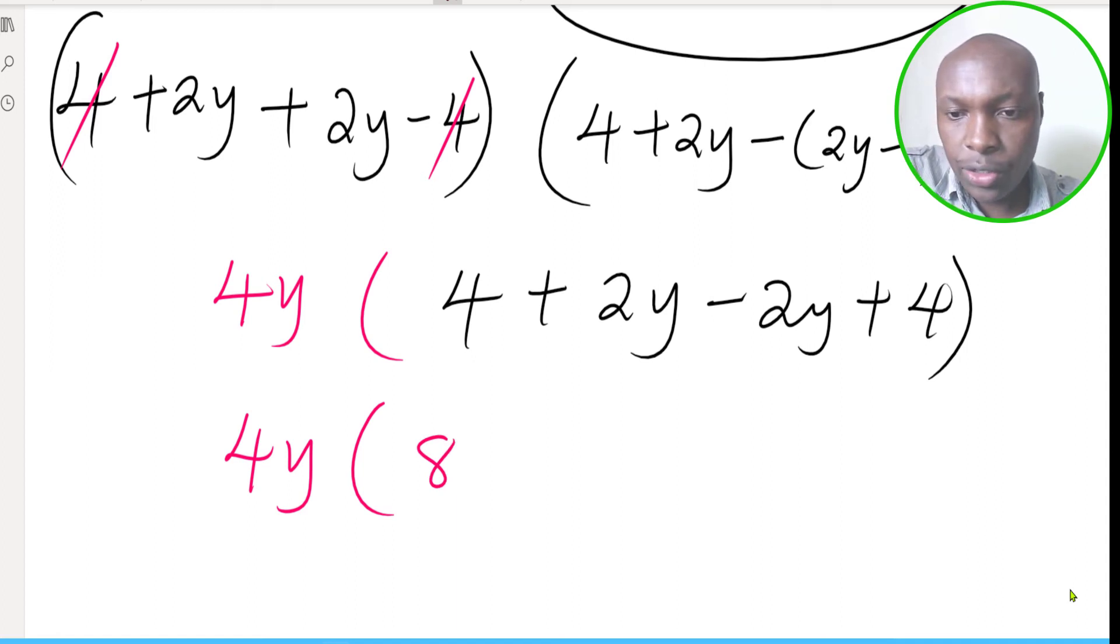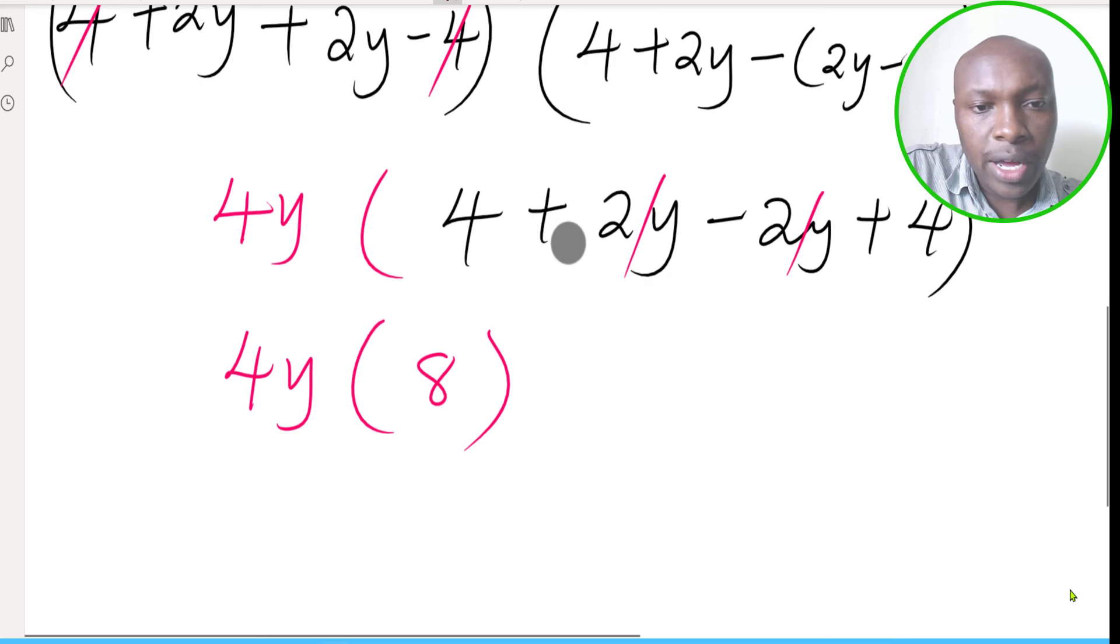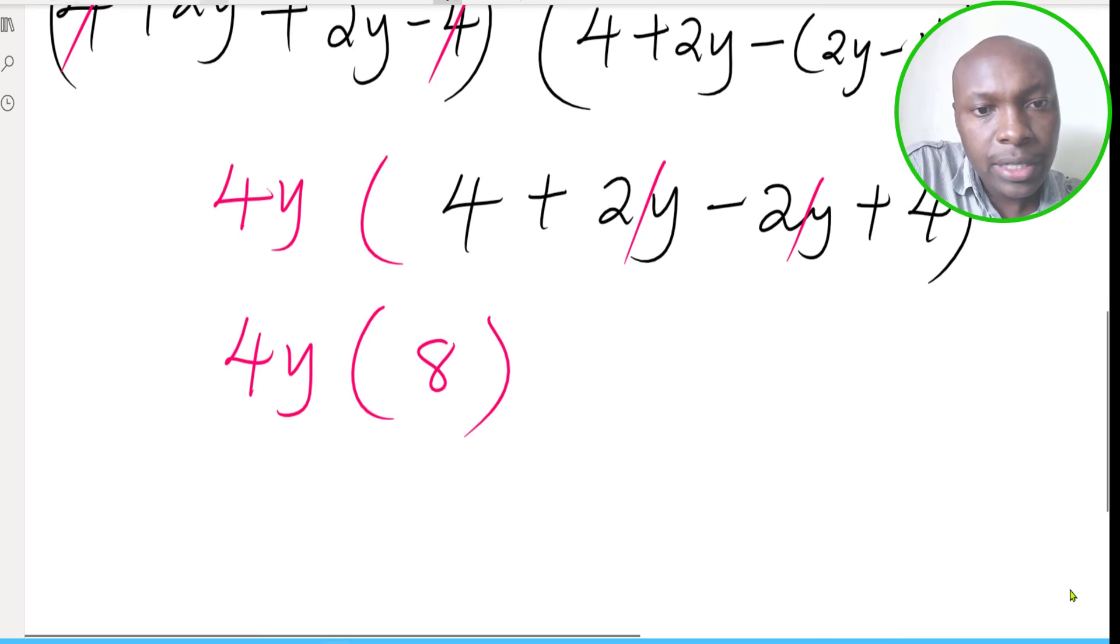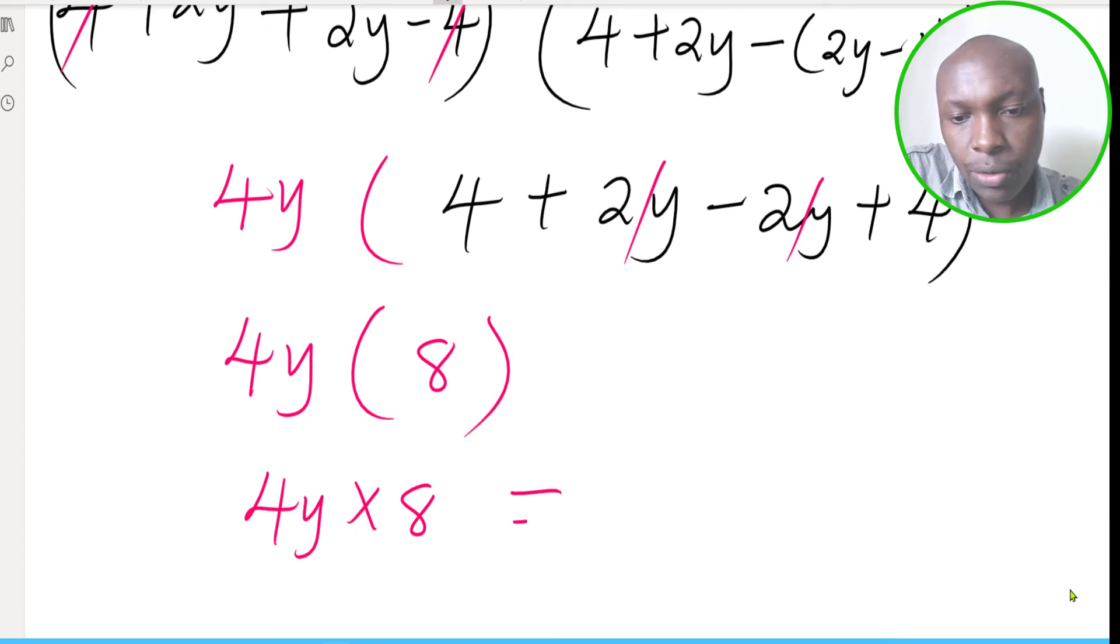And then 2y and 2y will subtract each other, and hence you have zero. So therefore you have 4y multiply by 8, so this is the same as 4y multiply by 8.